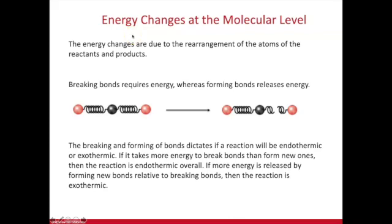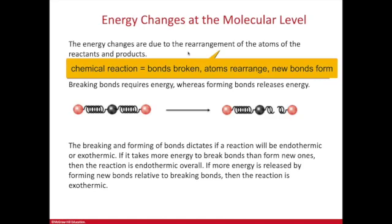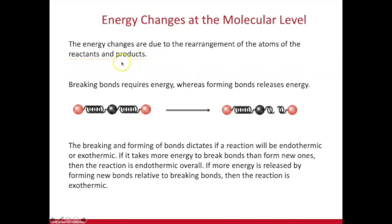We're focusing on chemical energy, which is at the molecular level — we can't see the bonds that are broken and formed in a chemical reaction. Those are energy changes that occur when bonds are broken in reactants, atoms are rearranged, and then new bonds are formed, resulting in products. Breaking bonds always requires an initial input of energy.